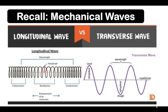In mechanical waves, we have two types. First is the longitudinal wave. Longitudinal waves are waves in which the displacement of the medium is in the same direction as, or the opposite direction to, the direction of propagation of the wave. A physical example of a longitudinal wave is the toy slinky.